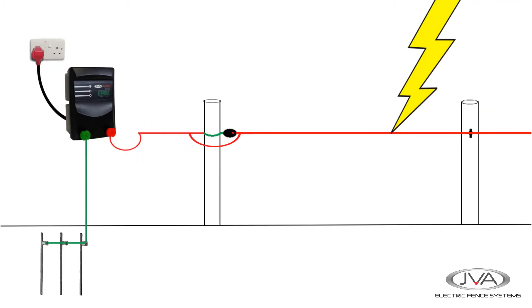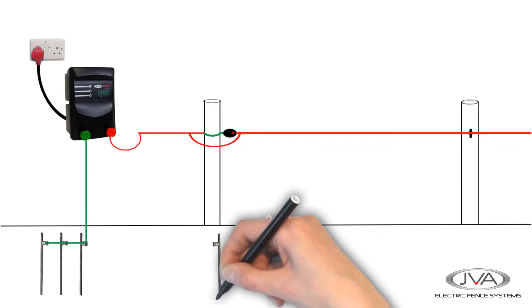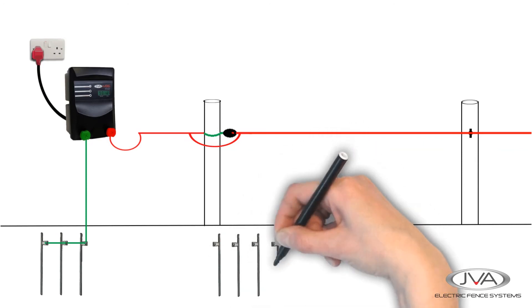How do we stop this? What we want to do is stop that lightning bolt getting to the energizer. So what we normally try to do is create at the fence a better earth than at the energizer.